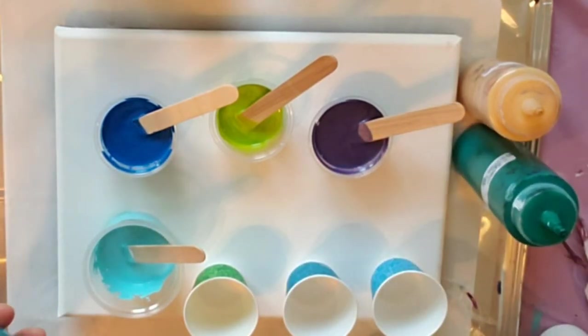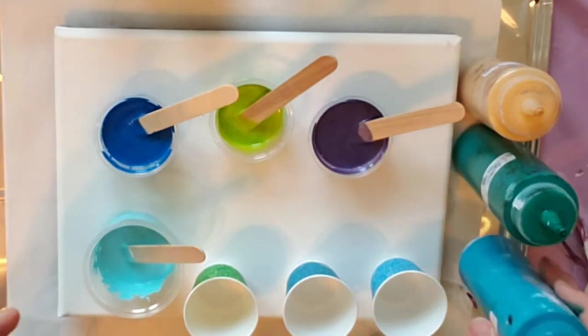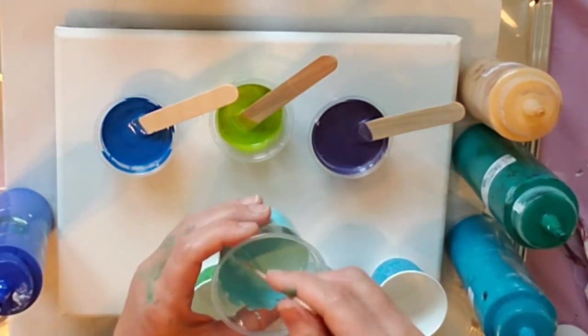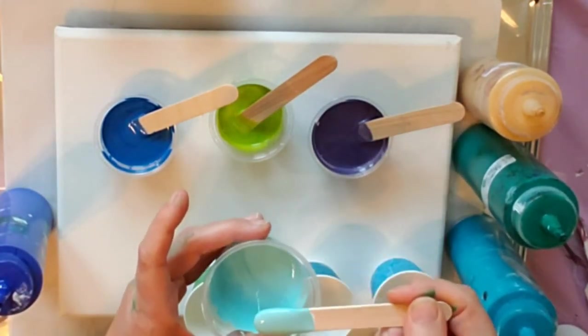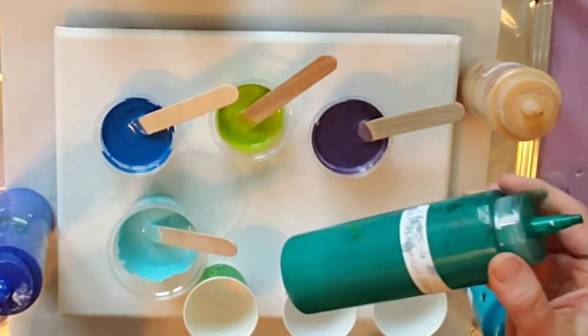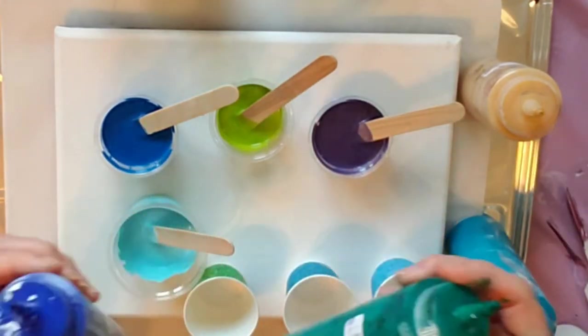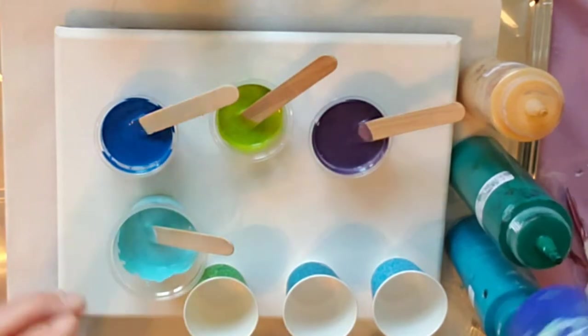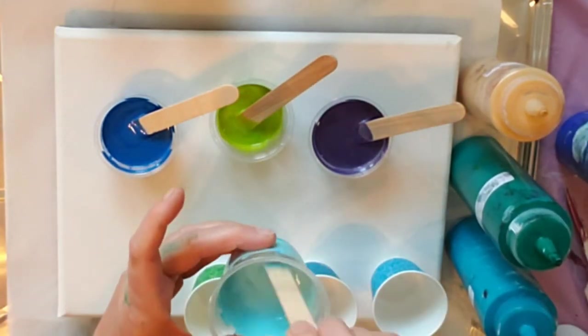They're all Liquitex Basics and my white is Amsterdam white. So I made an aqua color here, a custom color made out of the Liquitex Basics phthalo green and ultramarine blue. So this is how that turned out.